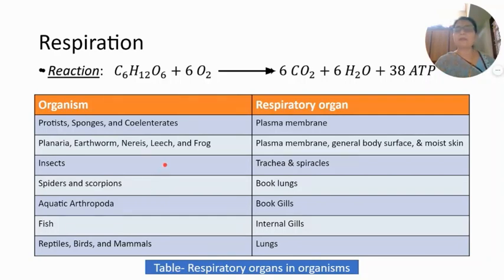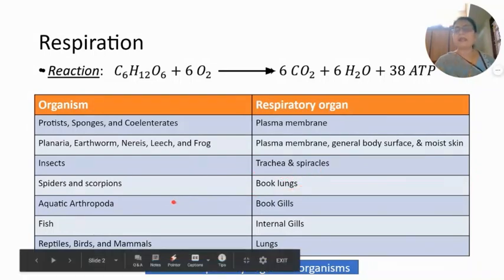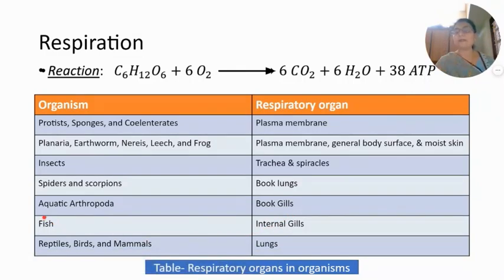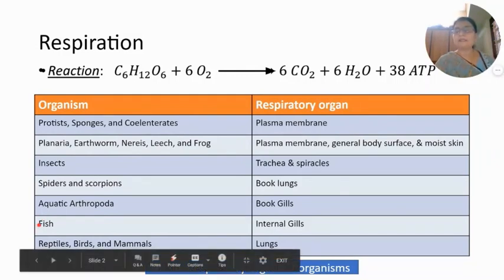Other insects such as butterfly and grasshopper use trachea and spiracles for respiration. Aquatic arthropod animals such as prawn and crab use book gills as their respiratory organ. In vertebrate animals, class Pisces — that is fish — have internal gills for respiration.